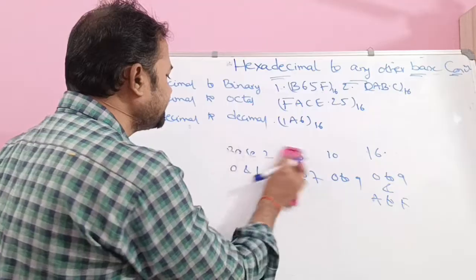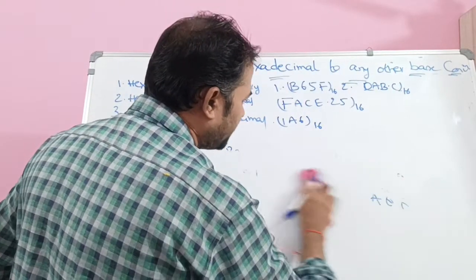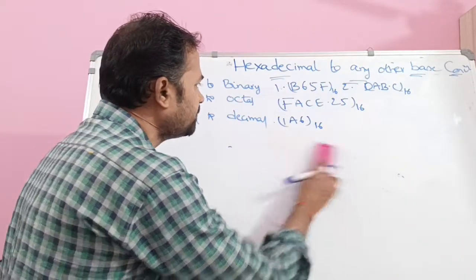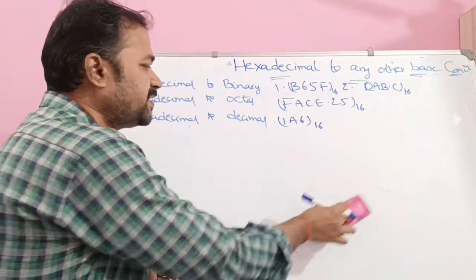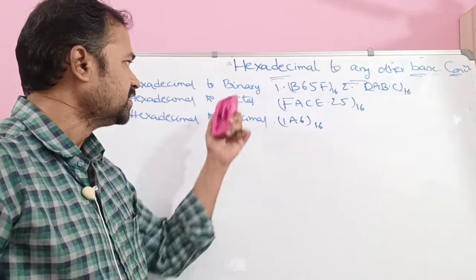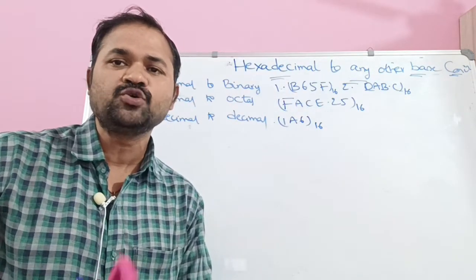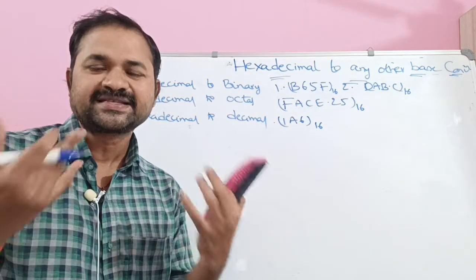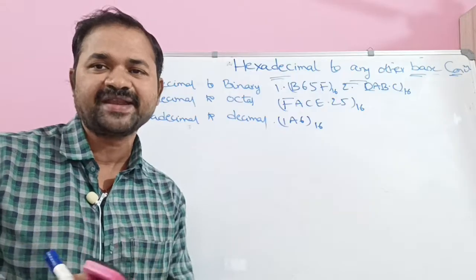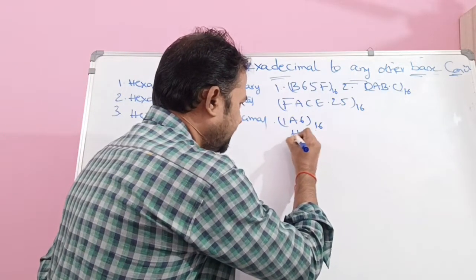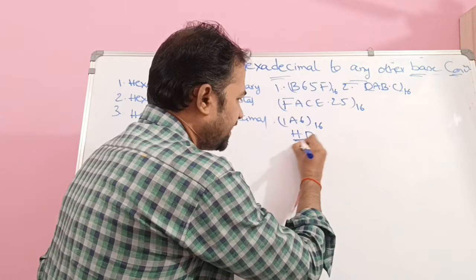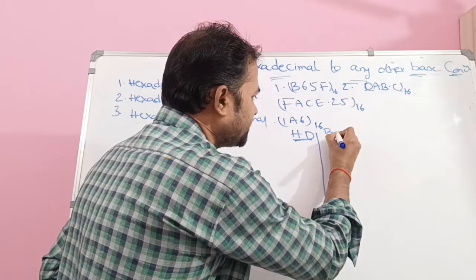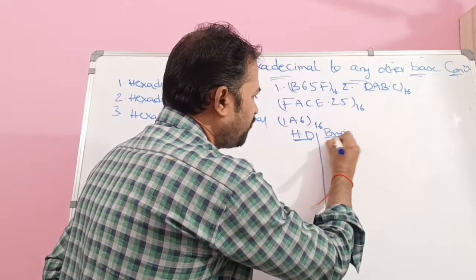Our target is to convert hexadecimal numbers to binary, octal, and decimal. Let us first see hexadecimal to binary. To do this, we represent hexadecimal digits using binary notation. We have two columns: hexadecimal symbols and their binary notation. For binary, we use the 8421 notation.